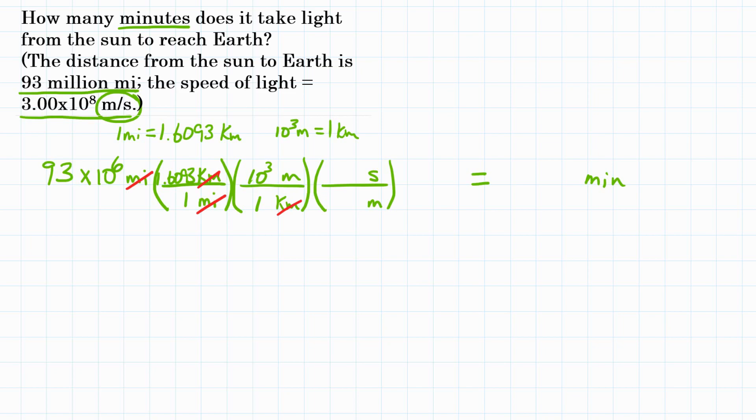And for this relationship we will use the speed of light, where 3.00 times 10 to the 8th meters is for every 1 second. And now meters will cancel and we're left with seconds, but again the problem wants minutes.